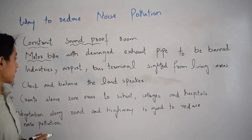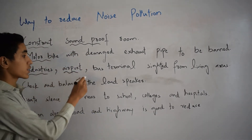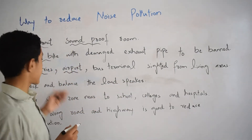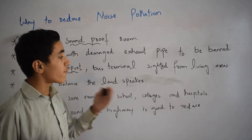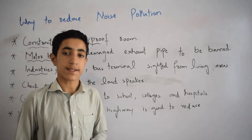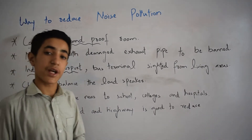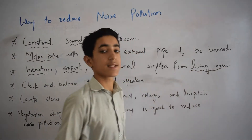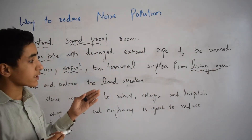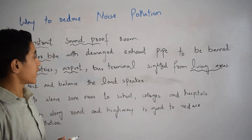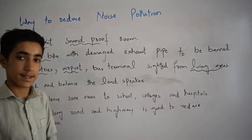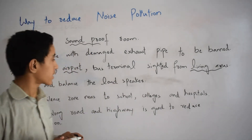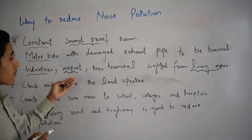The third way is industries, airports, and bus terminals should be sited away from living areas. If you want to construct an industry, you need to construct it far from living areas, because industries create noise and that noise disturbs living areas. Also, if you want to build a house, you should not construct it near mills, railways, airports, or bus terminals.